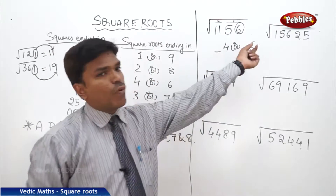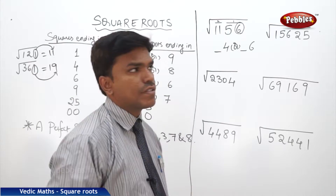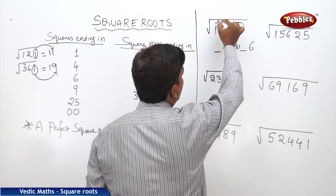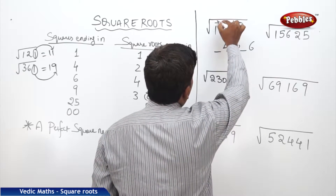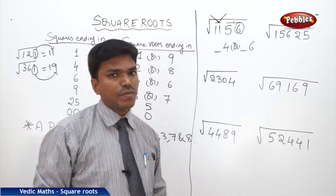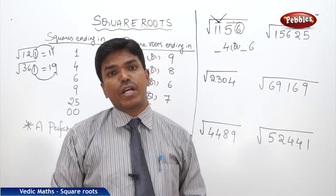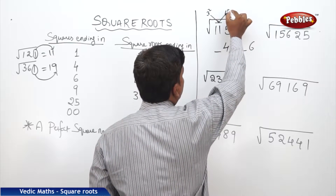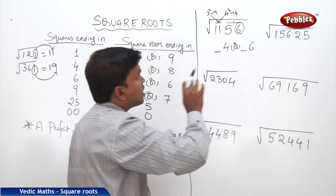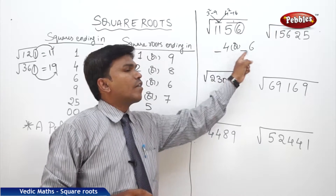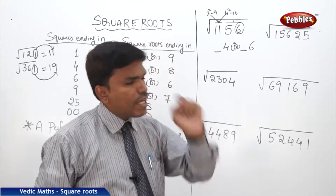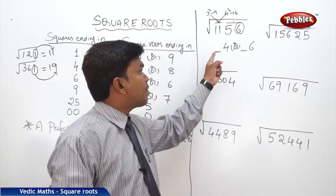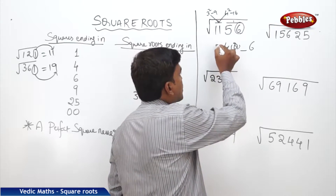Now we have to find out what is the left side part of the answer. Go to the second partition of the given square number. What is the second partition here? 11. Now, 11 comes between which square numbers? It comes between 3 square and 4 square — 3 square is 9, 4 square is 16. The left blank in the answer is always filled with the lower square number. Out of 3 and 4, the lower number is 3.